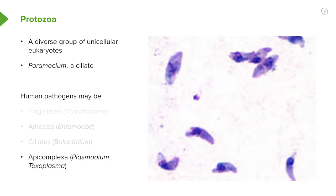And finally, some of the protozoa called apicomplexa can cause human disease. These include the very well-known plasmodia, the agents of malaria, and toxoplasma, the agents of toxoplasmosis.